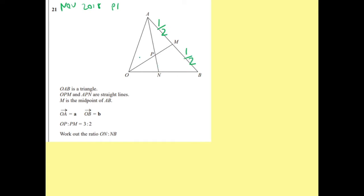OP to PM is 3 to 2. So that's 3 fifths and that's 2 fifths. OA is A and OB is B. So we need to work out ON to NB.